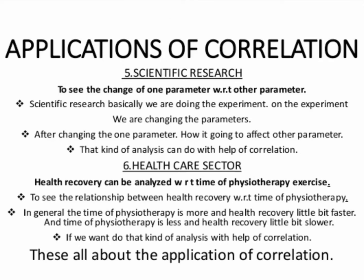The fifth one is scientific research. Scientific research means to see the change of one parameter with respect to another parameter. In scientific research we basically conduct experiments and change certain parameters. After changing one parameter, we observe how it affects other parameters, and that kind of analysis we can do with the help of correlation.